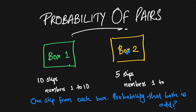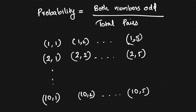We have two boxes. In each box, we have 10 slips. One slip from each box is taken. Both numbers form a pair, and the total number of pairs equals the sample space. This is the probability — the total number of pairs.